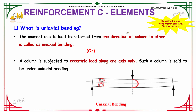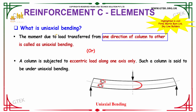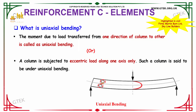Our next question is: what is uniaxial bending? Uniaxial bending is the moment due to load transferred from one direction of the column to the other. A column subjected to an eccentric load along one axis only is said to undergo uniaxial bending.